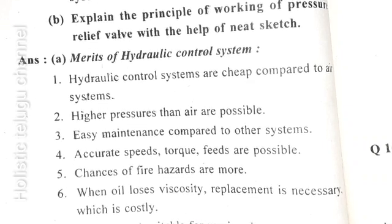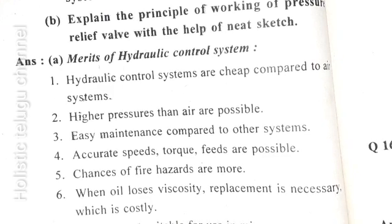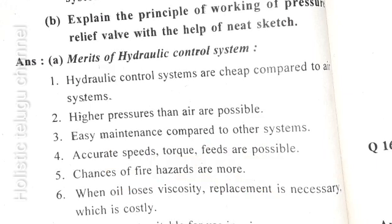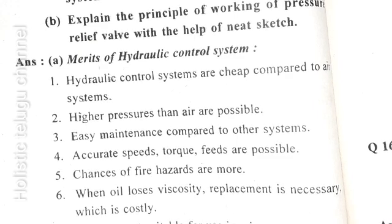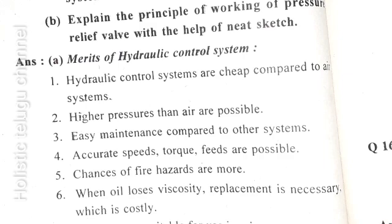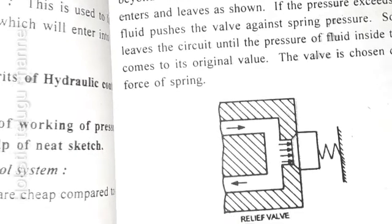Merits of hydraulic control system: comparing to air systems, higher pressures are possible. Easy maintenance compared to other systems. Accurate speed, torque, and feed are possible. Demerits: chances of fire hazards are more. When oil loses viscosity, replacement is necessary which is costly. They are not suitable for use in mines. Leakage will create unwanted effects. Control systems work effectively if the fluid flow is laminar only. Operation becomes slower if the control pipes are lengthy.